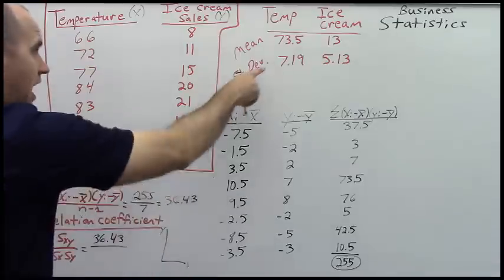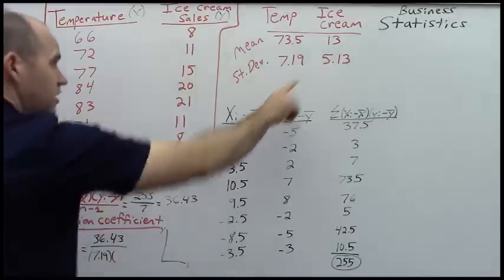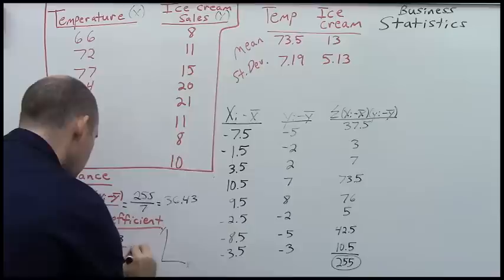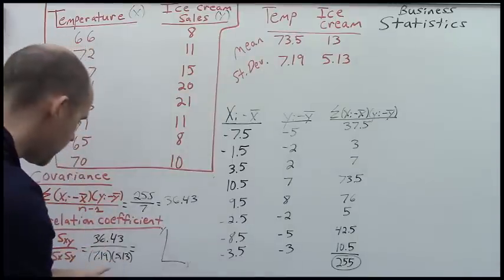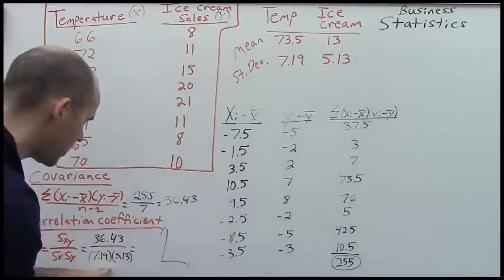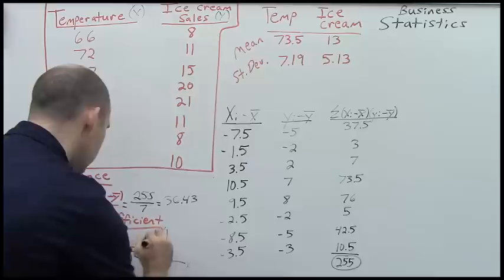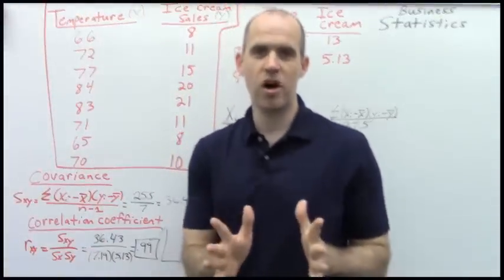Times the standard deviation for y, 5.13. And if you were to divide 36.43 by 7.19 times 5.13, if you round up, you get a value of .99. So almost one. So that .99 means we're way over here on the correlation coefficient.